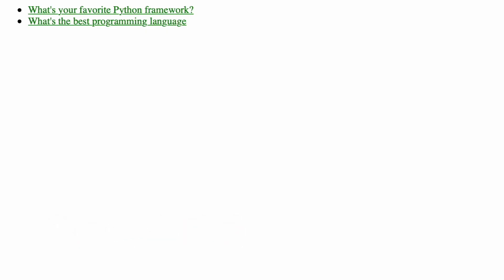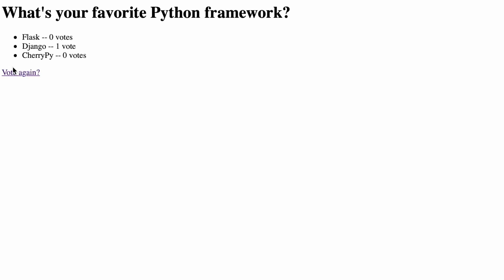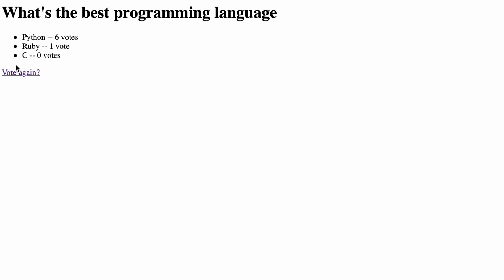I'm going to build a Polls app in Django which allows us to select a number of different questions. For example, what our favorite Python framework is — we can click on this and then select one of the answers, for example Django, and then confirm our vote. This way we keep track of the different options and how many votes each one got. Each time we click on that we can add another vote. For example, for our favorite programming language we can select Python, confirm this, and this is going to be saved in our database.